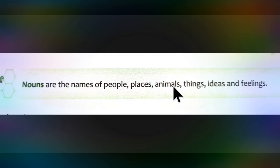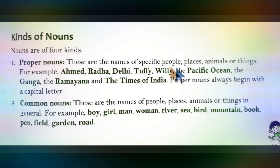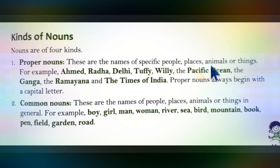Now let's study about kinds of noun. The first kind of noun is proper noun. Proper nouns are the names of specific or particular people, places, animals or things.